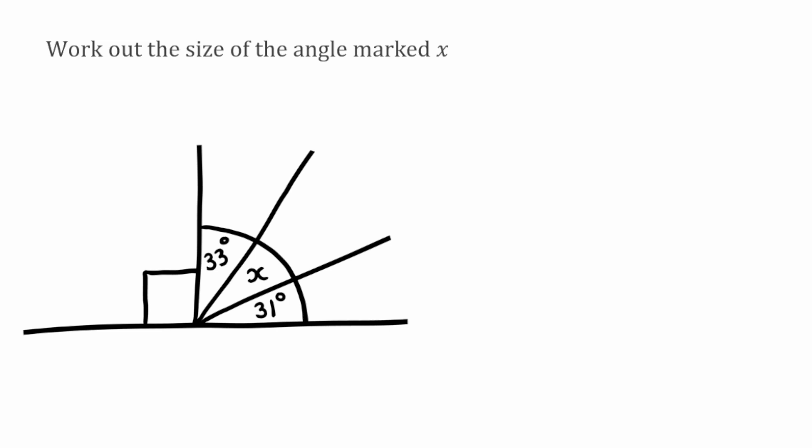So starting on the left we've got a right angle. So we know a right angle is 90 degrees. So we're going to take 90, we're going to add on our 33, we've then got our X which we're going to leave for in a minute and then we're going to add on this final 31. So if I now add all these numbers together I get 154.